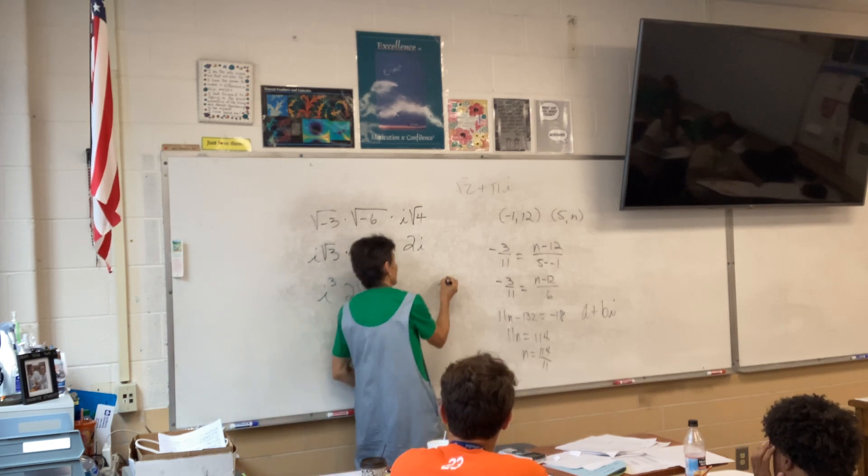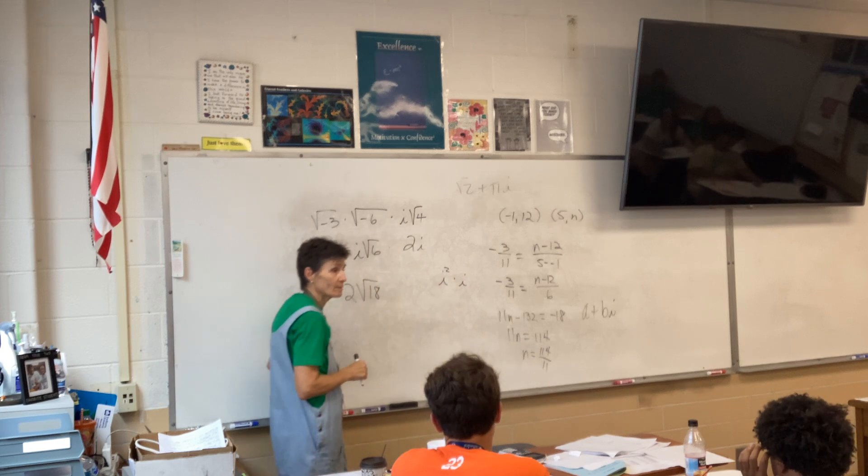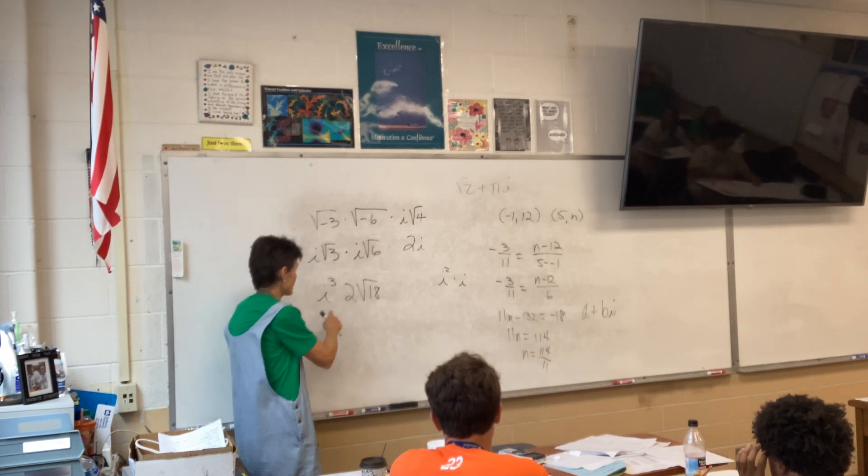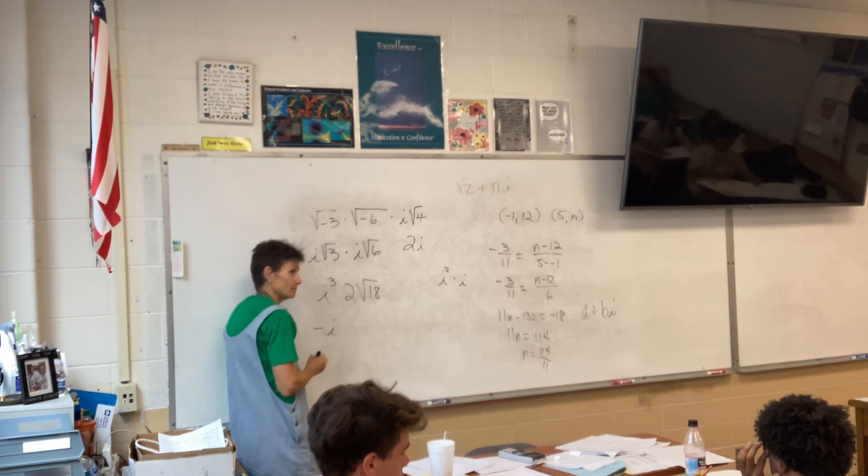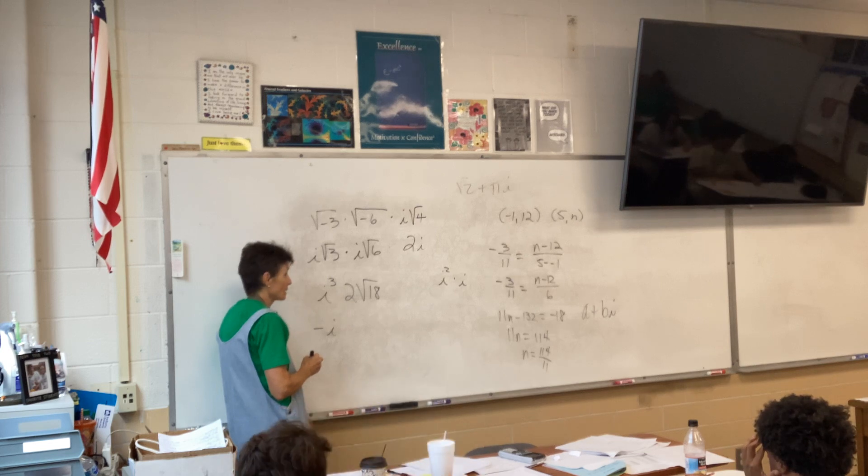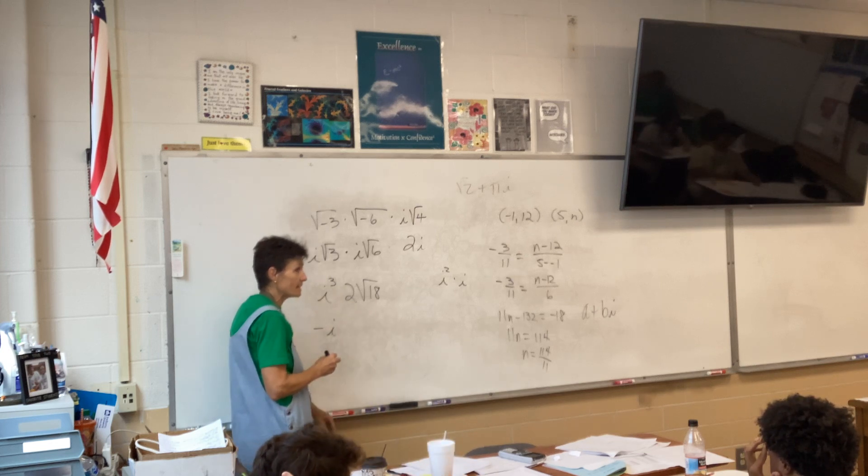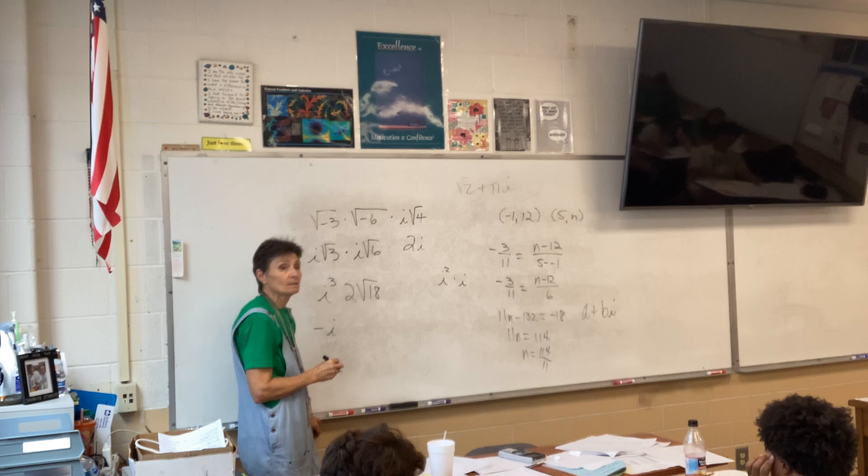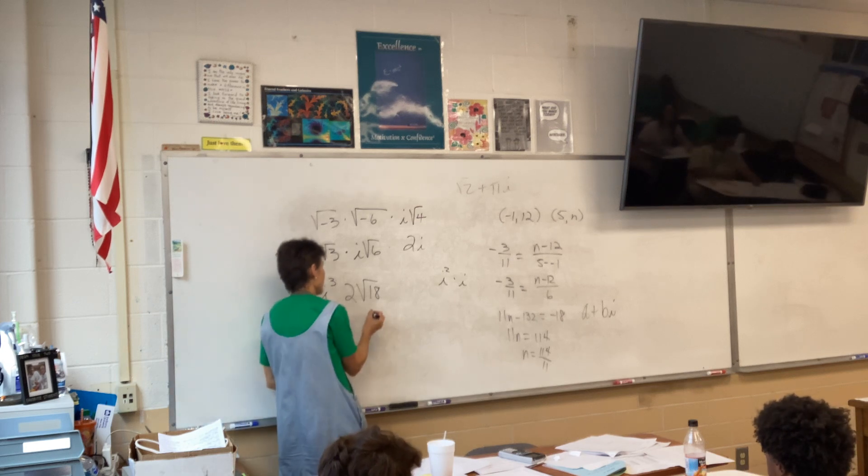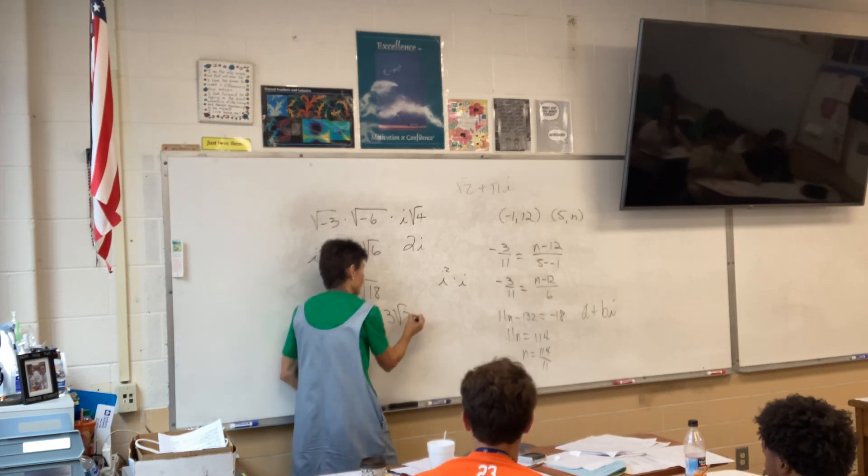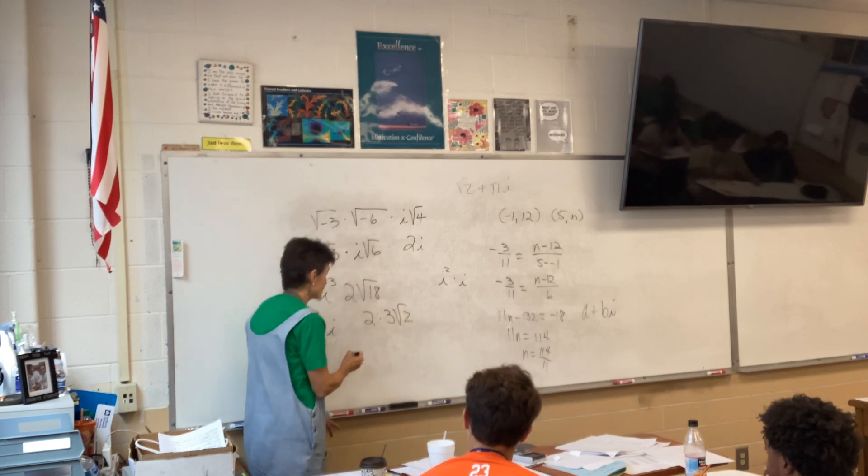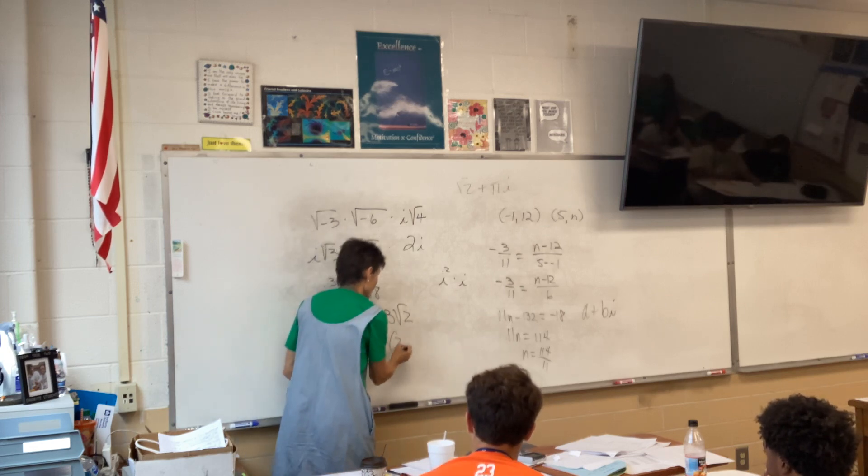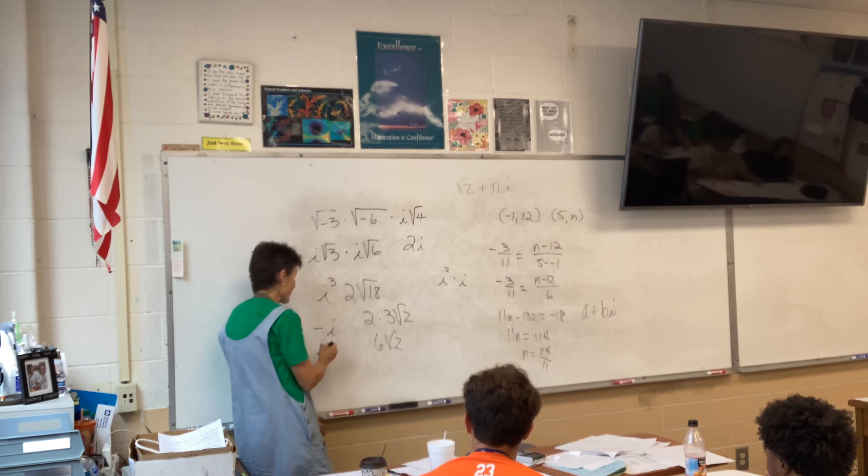But i squared is negative 1. So, this is negative i. Root 18 is 3 radical 2. So, I have 2 times 3 radical 2, which gives me 6 radical 2 times negative i. So, most, like, the typical way of writing that is negative 6i root 2.